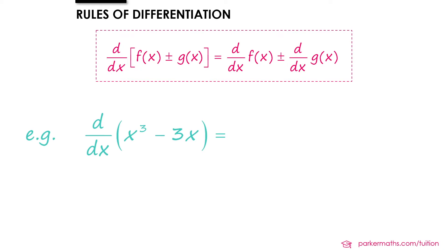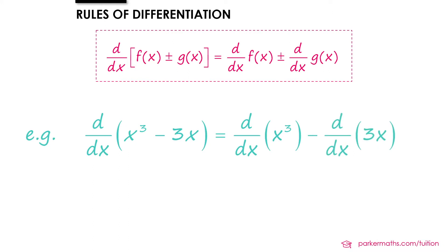We can illustrate this one with a simple example as well. Suppose we want to differentiate x cubed minus 3x. First we would differentiate x cubed and then subtract the derivative of 3x, and that would give us our answer. The derivative of x cubed is 3x squared and the derivative of 3x is 3, so we get 3x squared minus 3.